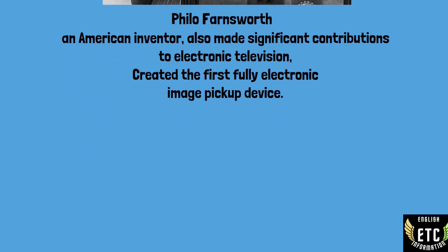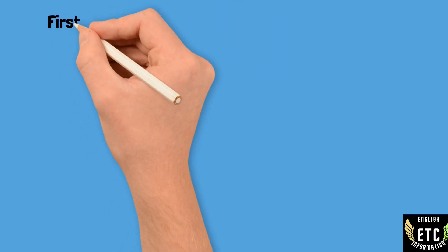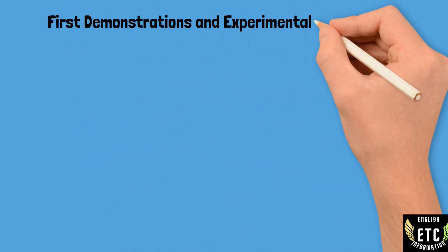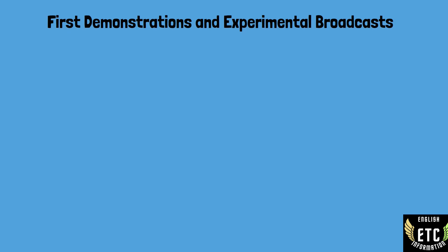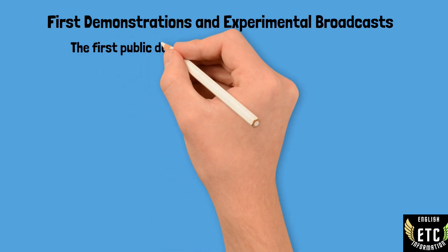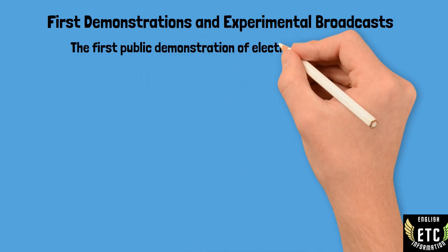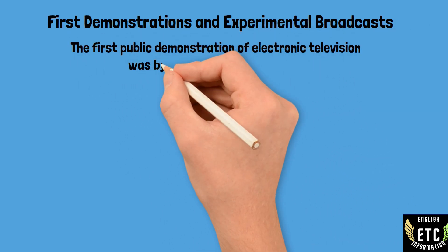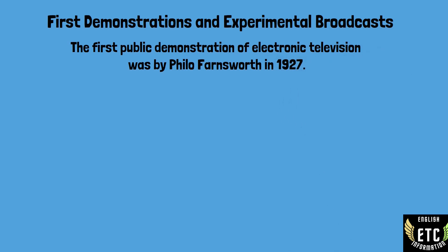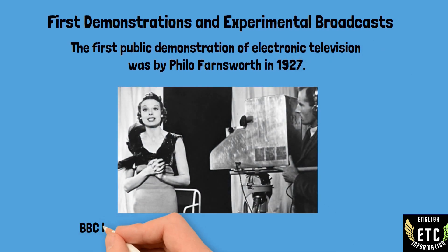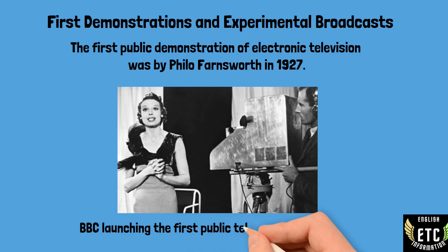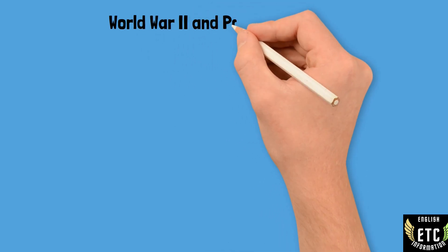The first public demonstration of electronic television was by Philo Farnsworth in 1927. Regular experimental broadcasting began in the 1930s, with the BBC launching the first public television service in 1936.